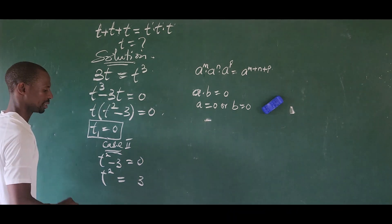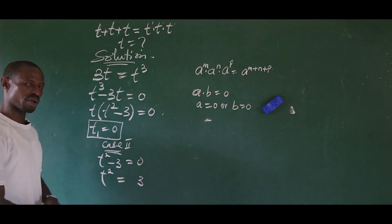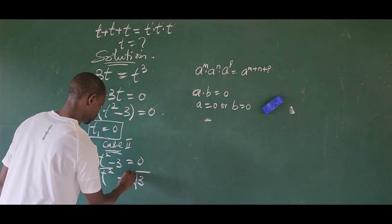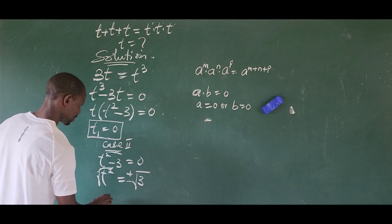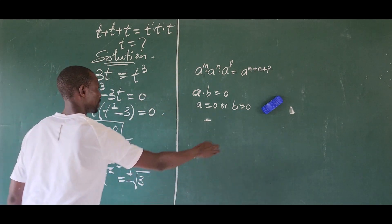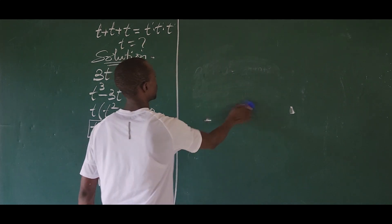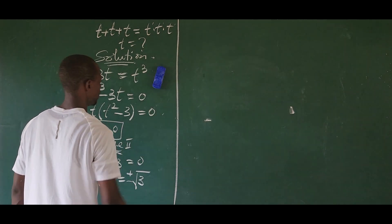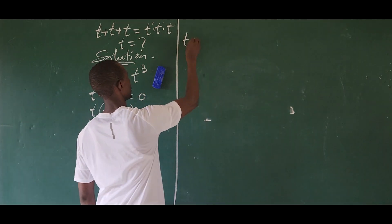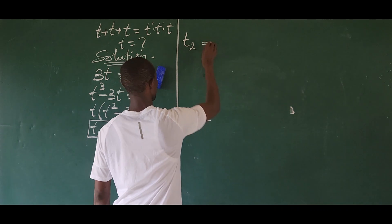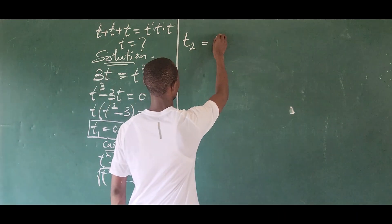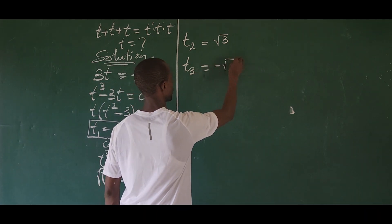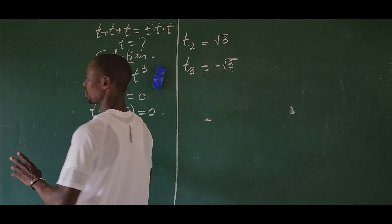Moving three to the other side gives us t squared equals three. Taking the square root of both sides, and introducing the plus-or-minus, we get t₂ equals positive square root of three, and t₃ equals negative square root of three.